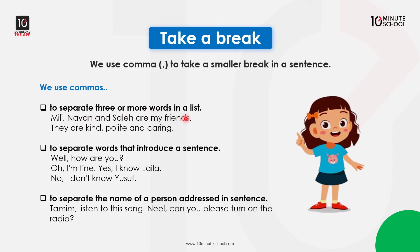We use a comma to take a smaller break in a sentence. For example: they are kind, polite and caring. We also use a comma after two separate words that introduce a sentence — well, how are you? Oh, I'm fine. Yes, I know Lila. No, I don't know Yusuf. So, in this case, we have a sentence.